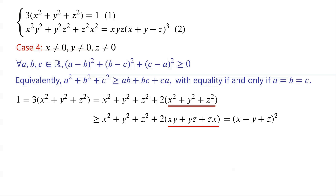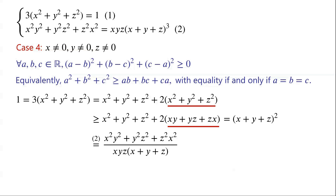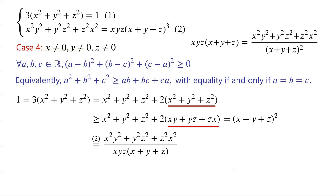Dividing both sides of equation two by xyz times (x + y + z), we have (x + y + z)² equals (x²y² + y²z² + z²x²) over xyz(x + y + z). Clearly the numerator is greater than zero. Dividing both sides of equation two by (x + y + z)², we have xyz(x + y + z) equals (x²y² + y²z² + z²x²) over (x + y + z)². We can see that both the numerator and the denominator are greater than zero, so xyz(x + y + z) must be greater than zero. So both the numerator and the denominator are positive numbers.